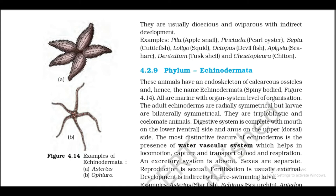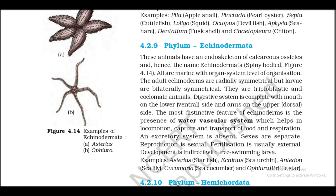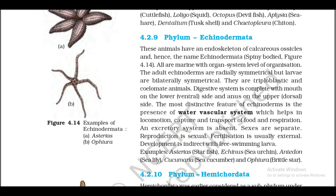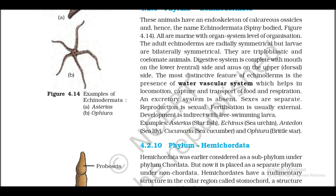4.2.9 Phylum Echinodermata. These animals have an endoskeleton of calcareous ossicles and hence the name Echinodermata — spiny bodies (Figure 4.14). All are marine with organ system level of organization. The adult echinoderms are radially symmetrical but larvae are bilaterally symmetrical. They are triploblastic and coelomate animals. The digestive system is complete with mouth on the lower ventral side and anus on the upper dorsal side.